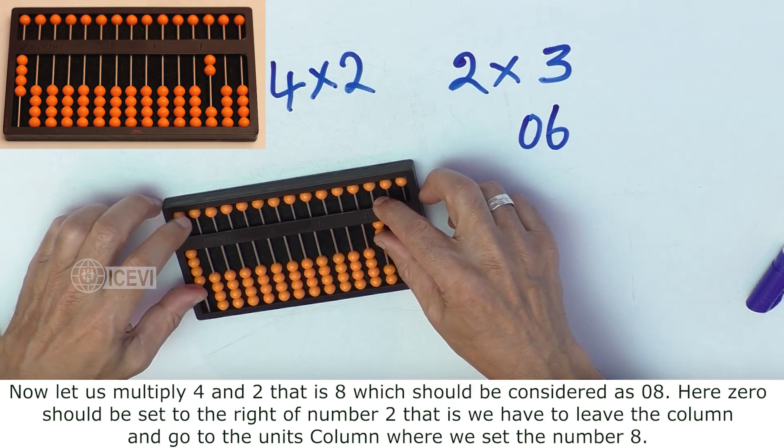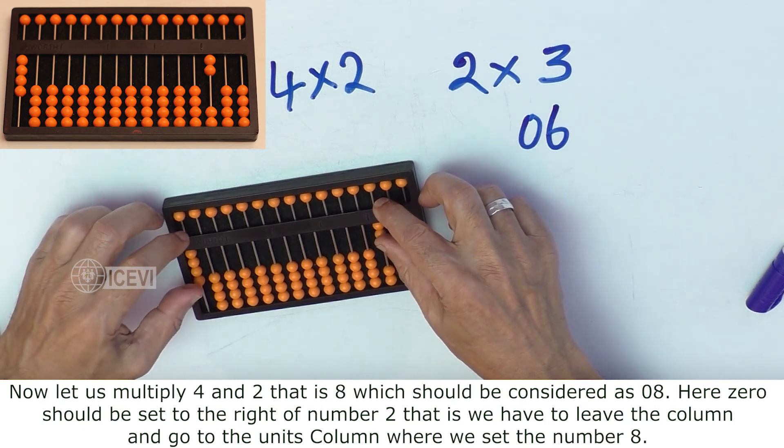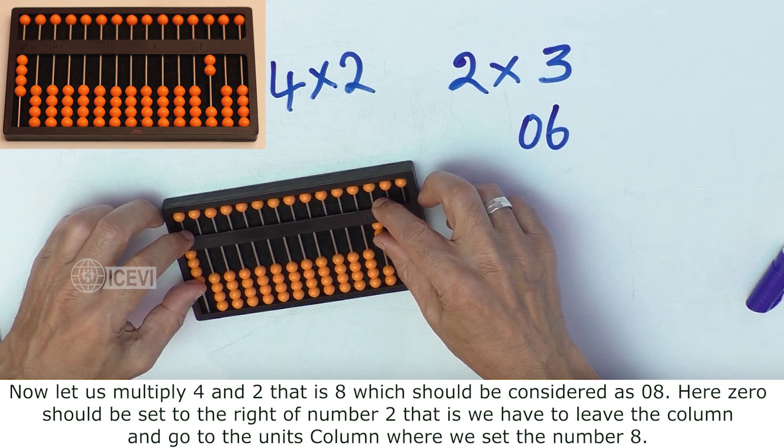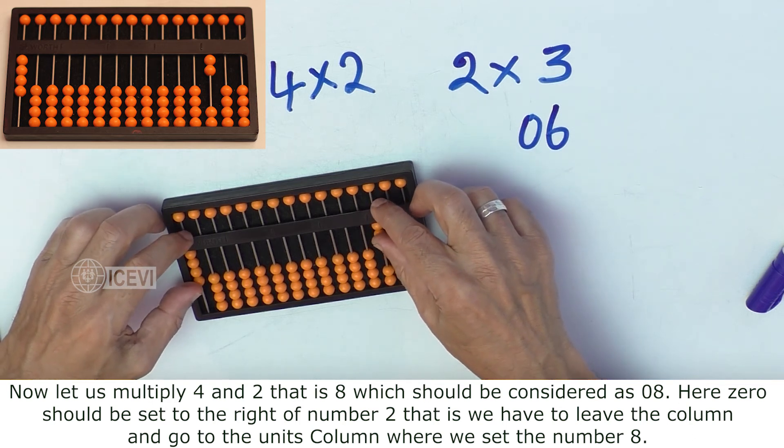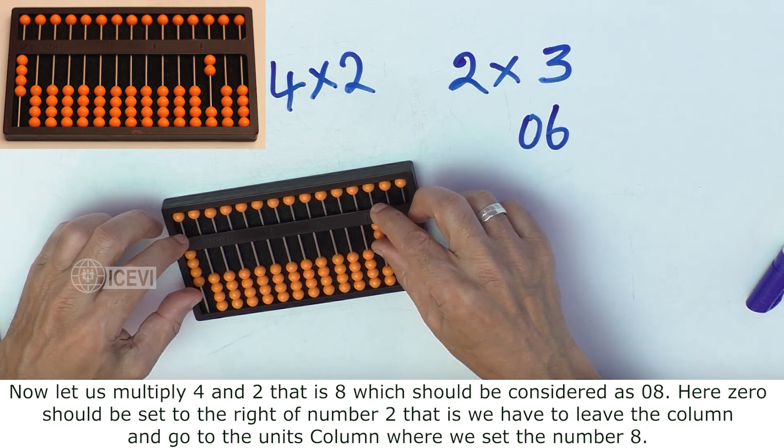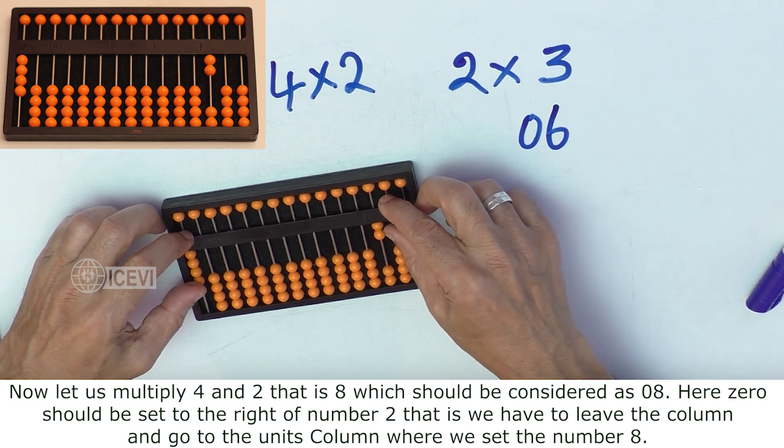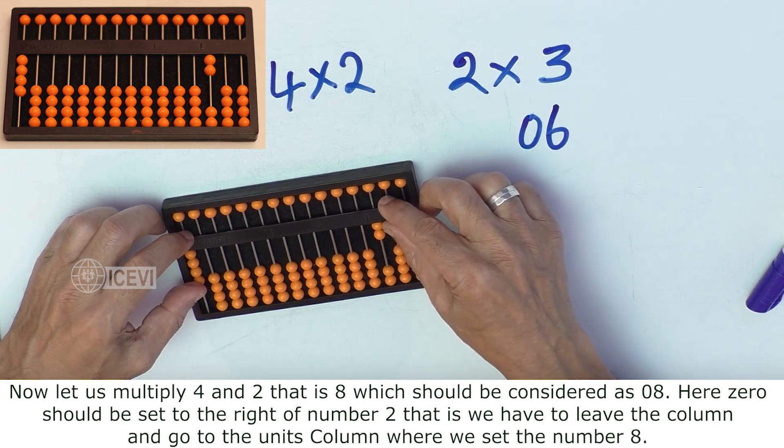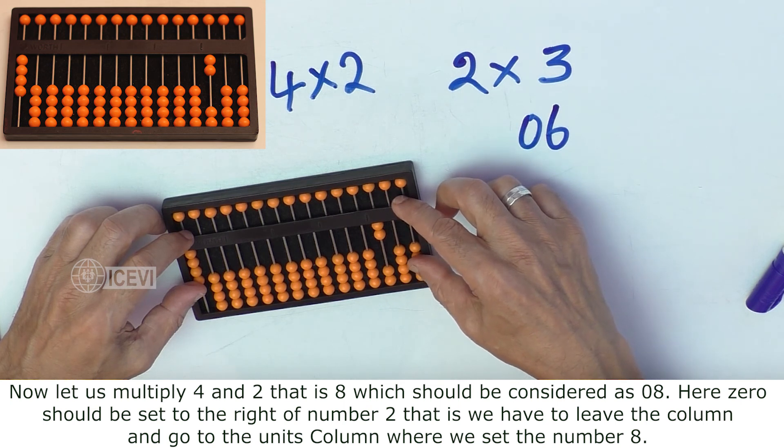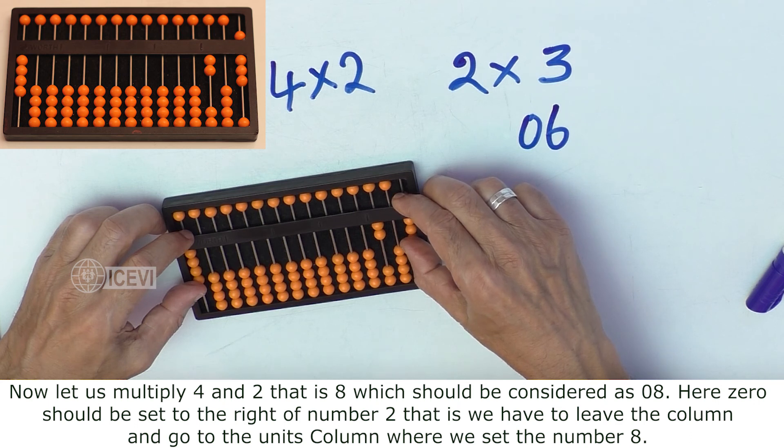Now, let us multiply 4 and 2, that is 8, which should be considered as 08, as the multiplied value is a single-digit number. Here, 0 should be set to the right of number 2, that is we have to leave the column and go to the units column, where we set number 8.